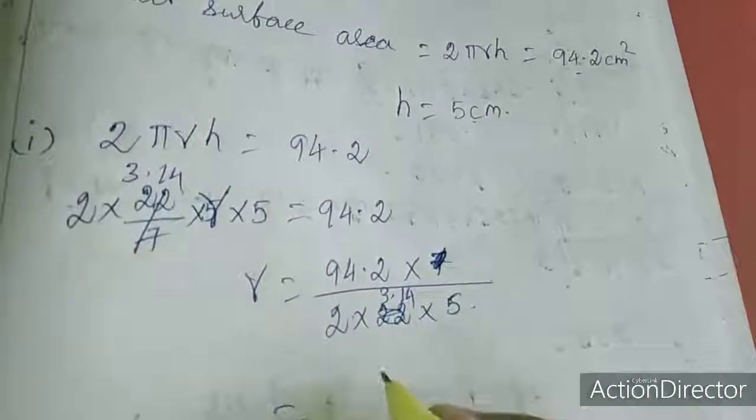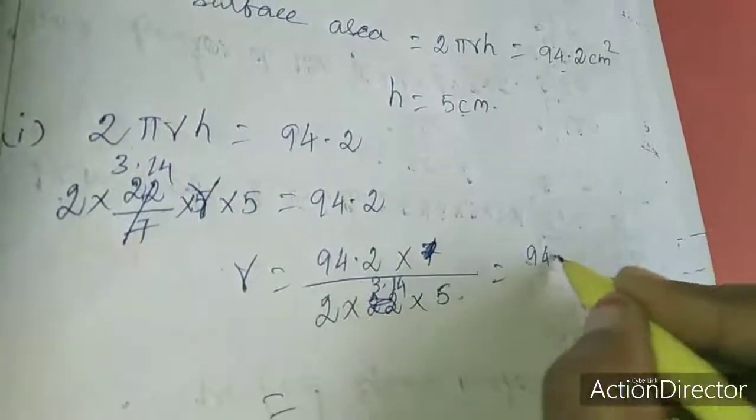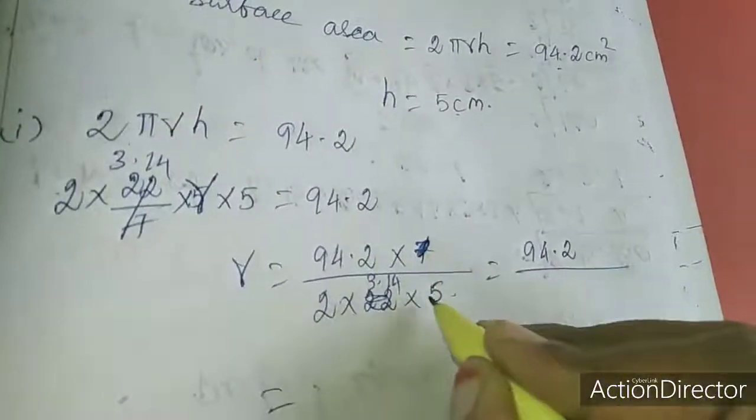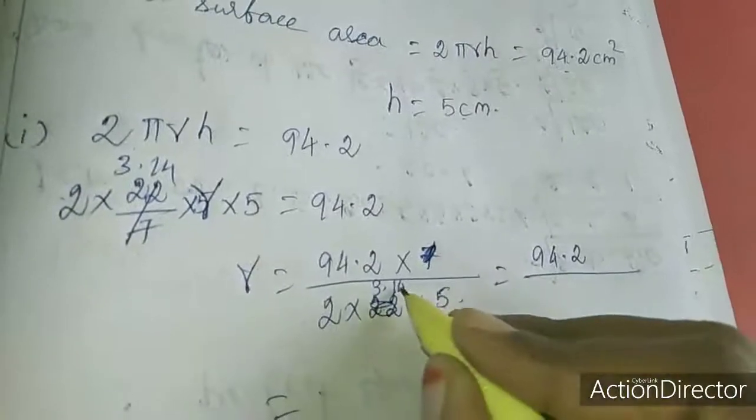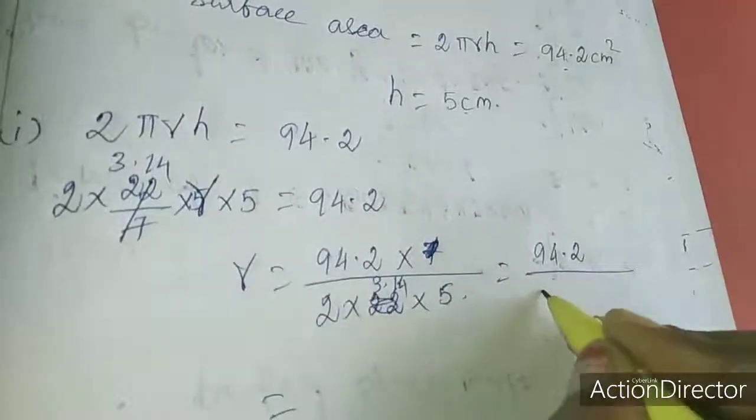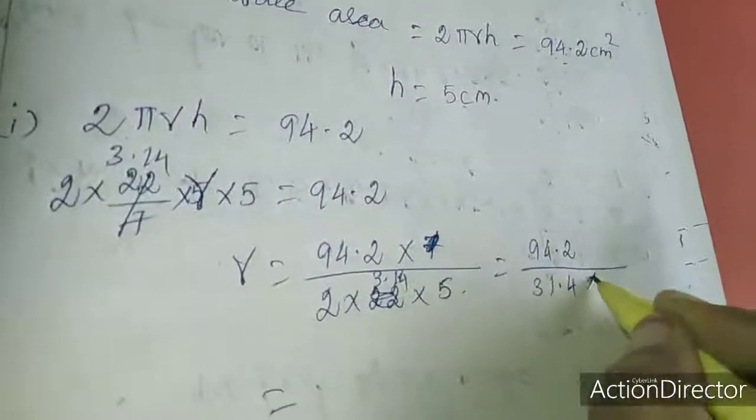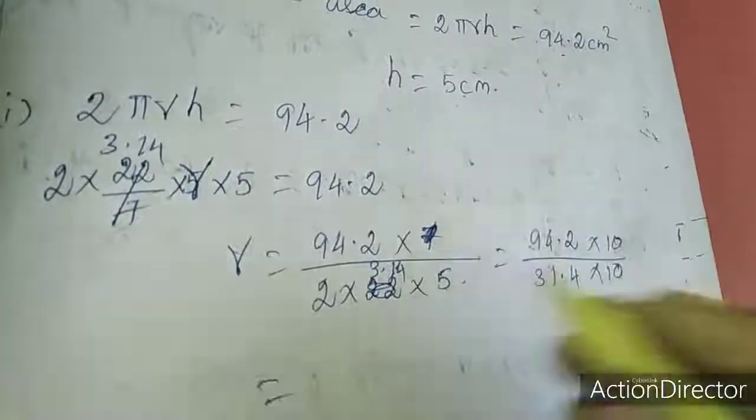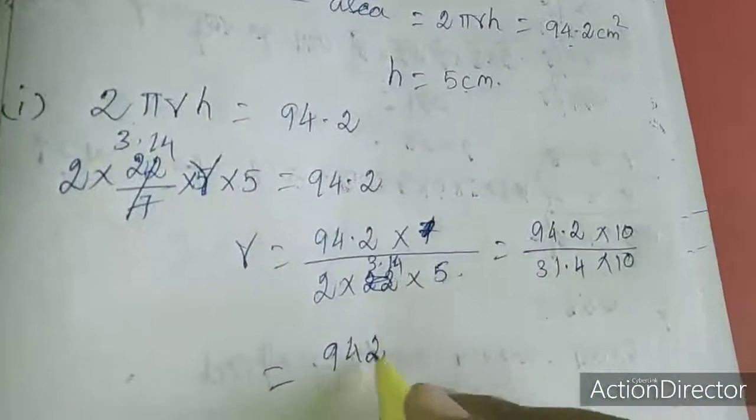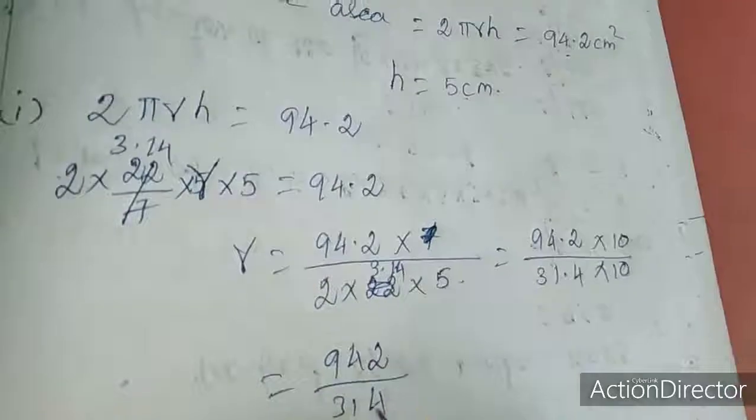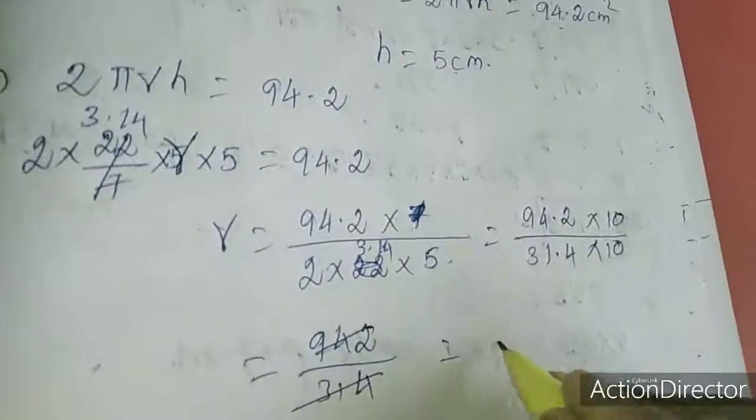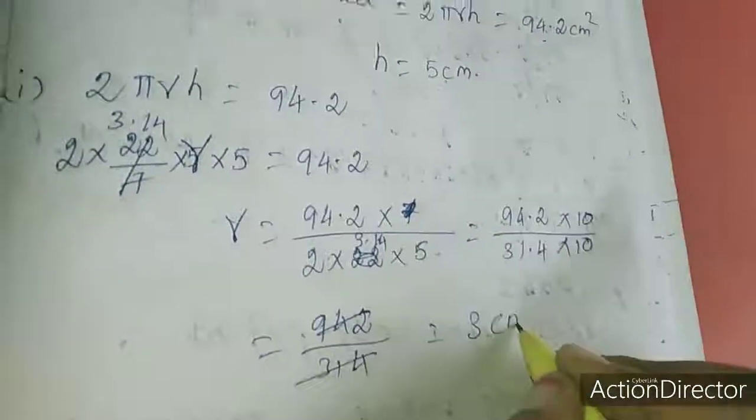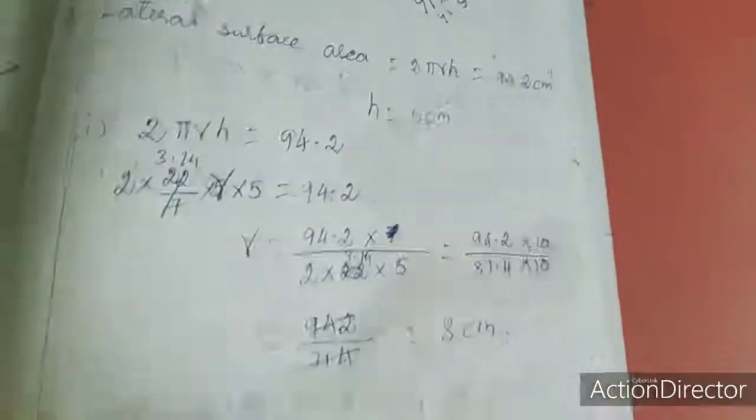Solving: 94.2 divided by 2 times 3.14 times 5. After canceling, r equals 3 centimeters.